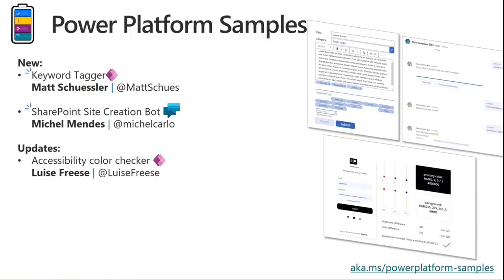We've got Power Platform samples covering the spectrum of Power Platform. Two new samples: one directly from a Sharing is Caring graduate — Matt's keyword tagger app — and Michael Mendez, who provided a SharePoint site creation, which is the first PBA sample that's been added. There are also updates for the Accessibility Color Checker app from Louisa Free. Some of those are still pending PRs and we will get them processed shortly. Thank you so much from the community for all these amazing contributions.